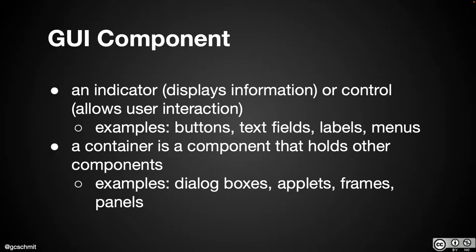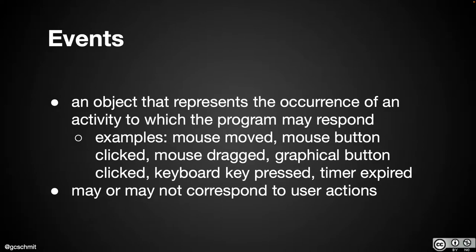Components are one of the three important pieces to make our graphical user interface work. The second important piece are events. Events are objects — an event object is created every time something related to our app happens. If the mouse is moved, the Java framework creates a mouse moved event. If a mouse button is clicked, the Java framework creates a mouse button clicked event or dragged. If a button is clicked, Java creates a button clicked event. A keyboard key is pressed, a keyboard press event is created.